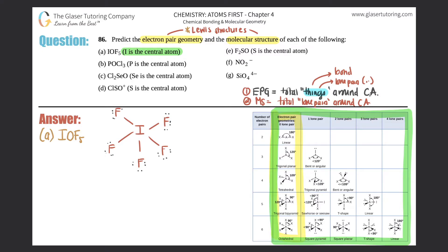The last bond is a double bond to oxygen, which has two lone pairs. If the Lewis structure is drawn properly, iodine has no lone pairs. Now we find the electron pair geometry: counting the bonds — one, two, three, four, five — and the double bond still counts as one thing, not two. With my highlighter there are a total of six things, meaning six electron pairs.